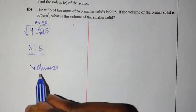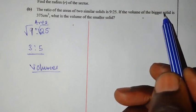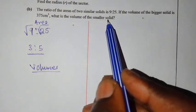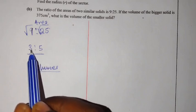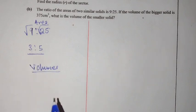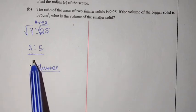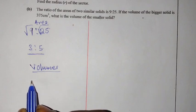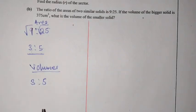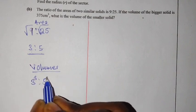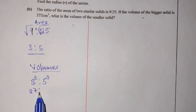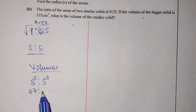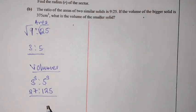Now we can look at their volumes. The volume of the bigger solid is 375, and they want us to find the volume of the smaller solid. Since we have found the linear scale factor is 3 to 5, we are going to write them to the power 3 to find the volumes. So 3 to the power 3 means 3 times 3 times 3, which gives us 27. And 5 to the power 3 means 5 times 5 times 5, which gives us 125. So the volume ratio is 27 to 125.